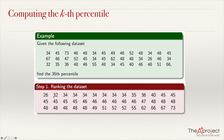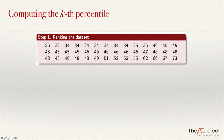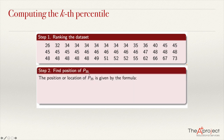Counting the data, there are 42 values in total. Now for the second step, finding the position. Since we want the 35th percentile, k = 35. Using the formula i = k/100 × n, we get i = 35/100 × 42 = 0.35 × 42 = 14.7. We get a number with a decimal.